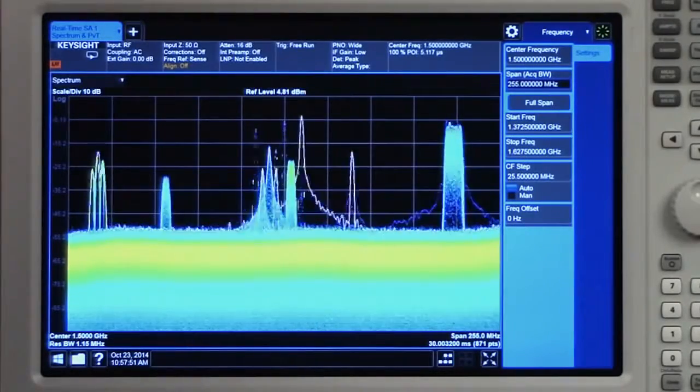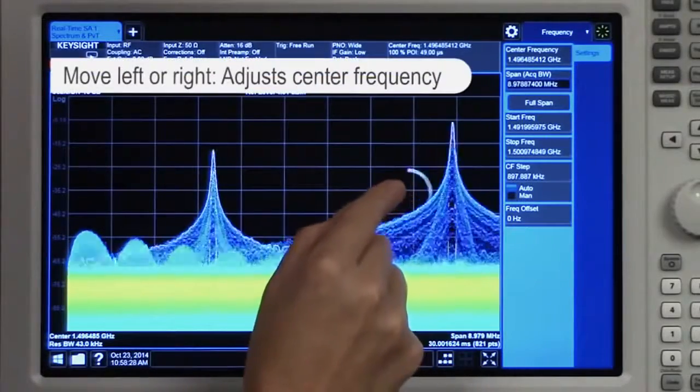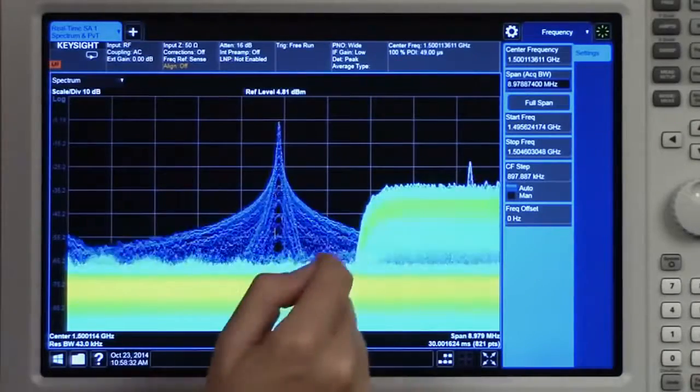By using gesturing, I can pinch and zoom in on this area. I can also drag to find my wideband CDMA signal. There it is.